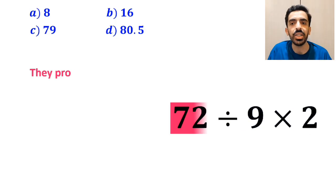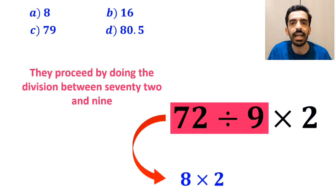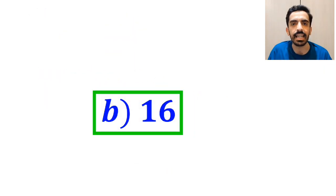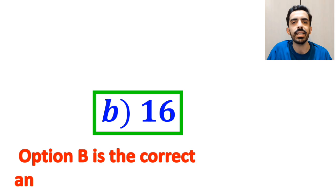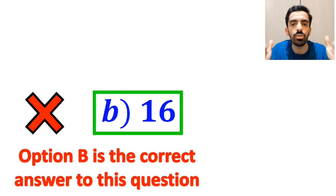Then, they proceed by doing the division between 72 and 9, which gives them 8 times 2. And finally, they multiply 8 by 2, which ends up with the answer 16. Then, without any hesitation, they quickly say that option B is the correct answer to this question. But that's definitely wrong.